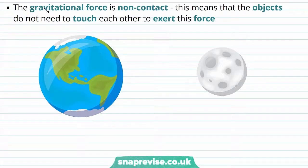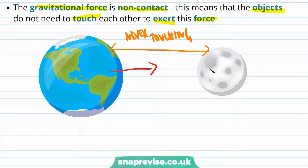The gravitational force is non-contact, which means that the objects do not need to touch each other to exert this force. For example, the Earth and the Moon are never touching, yet there is always a gravitational force between them.